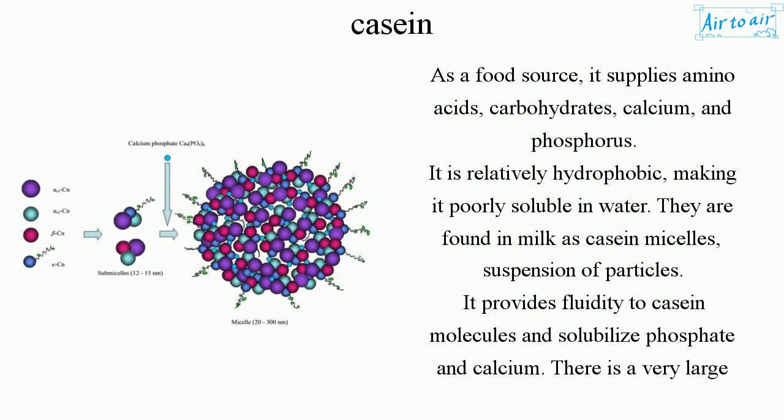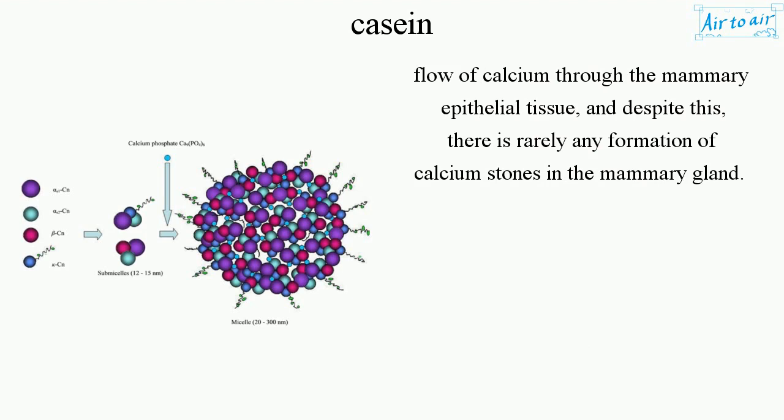As a food source, casein supplies amino acids, carbohydrates, calcium, and phosphorus. It is relatively hydrophobic, making it poorly soluble in water. Casein is found in milk as casein micelles — suspensions of particles — which provide fluidity to casein molecules and solubilize phosphate and calcium. There is a very large flow of calcium through the mammary epithelial tissue, yet despite this, there is rarely any formation of calcium stones in the mammary gland.